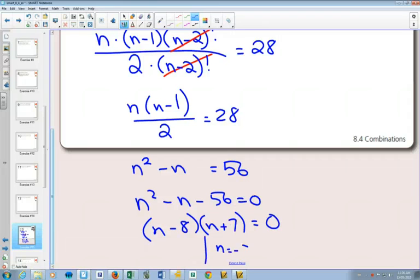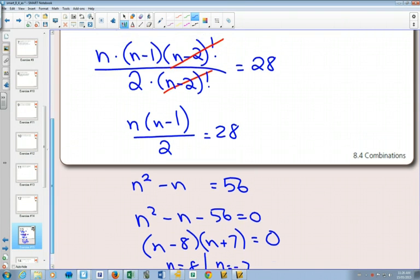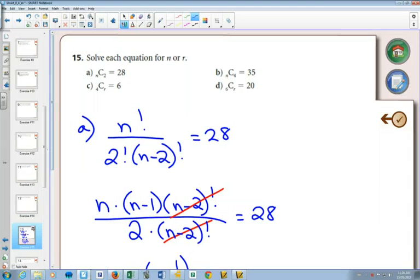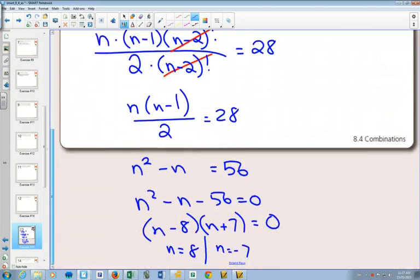And we get two different possibilities. n is equal to negative 7 and n is equal to 8. If we go back to our original question and see which one makes sense, you can't do a negative factorial. So if I have negative 7, that will make me take a negative factorial. So the only one that works is n equals 8.